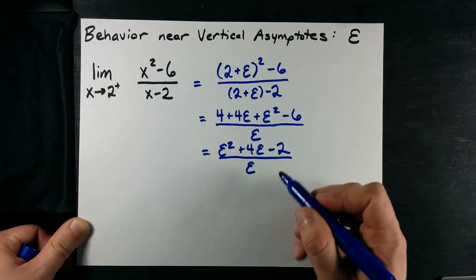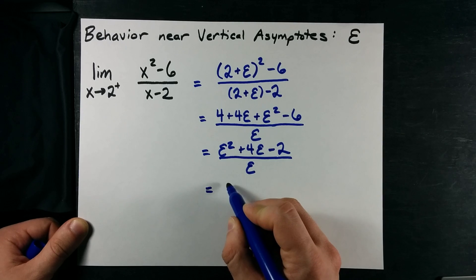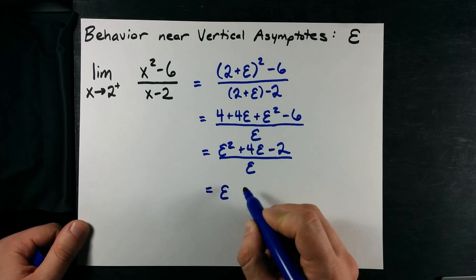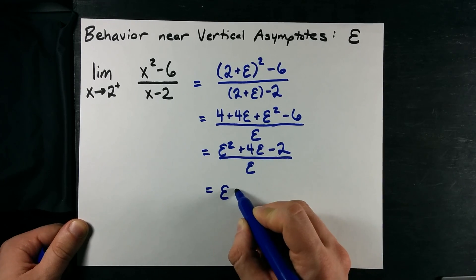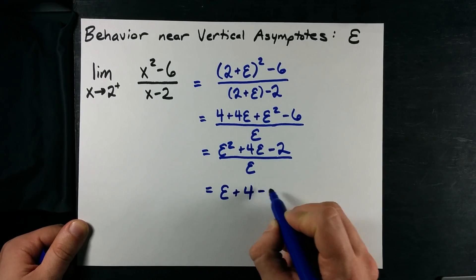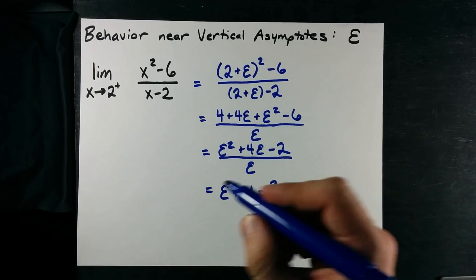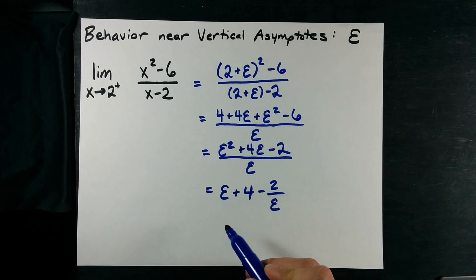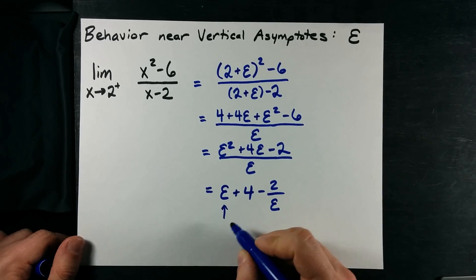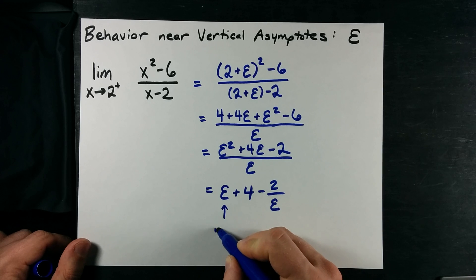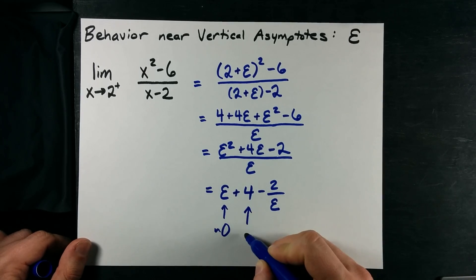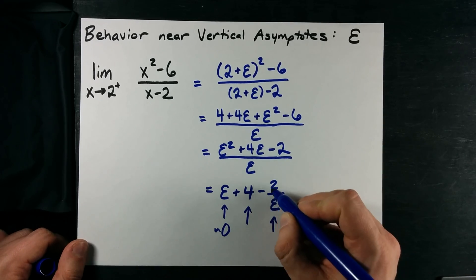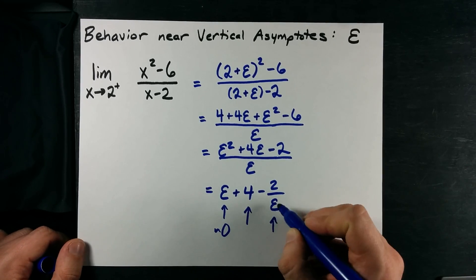And then I'm going to actually divide everything by epsilon. I get epsilon squared divided by epsilon is 1 epsilon. It's like a variable, right? 4 epsilon divided by epsilon is 4. And nothing cancels out here. So, the question becomes, what is this?